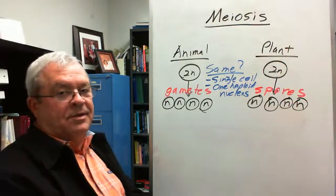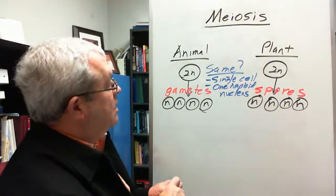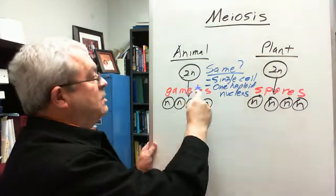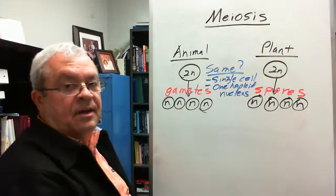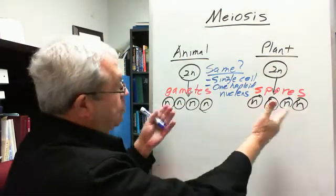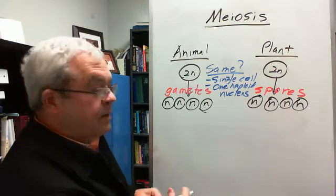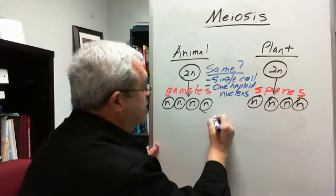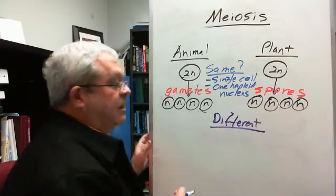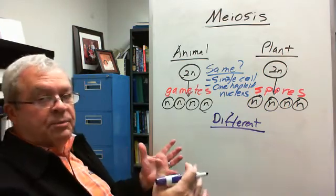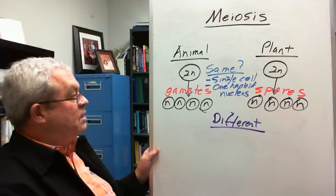But, gee, there better be a difference or there's no point in having different terms for them, right? So, what is the difference between gametes and spores? Once again, gametes and spores are both single cell, and they both have one haploid nucleus, and that follows from them both being products of meiosis, right? Single cells, haploid nuclei. Okay, that's something that's pretty obvious. But, how are they different? How are they different? They are different in how they reproduce. They are both reproductive cells, but they are different in how they do reproduce.